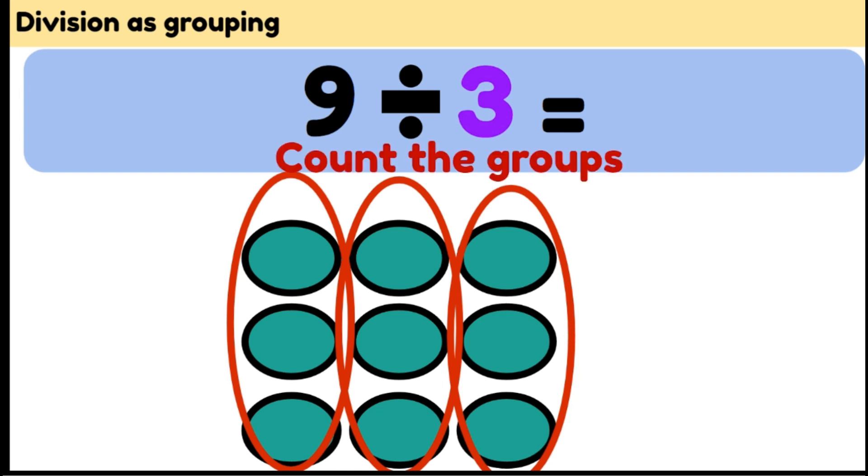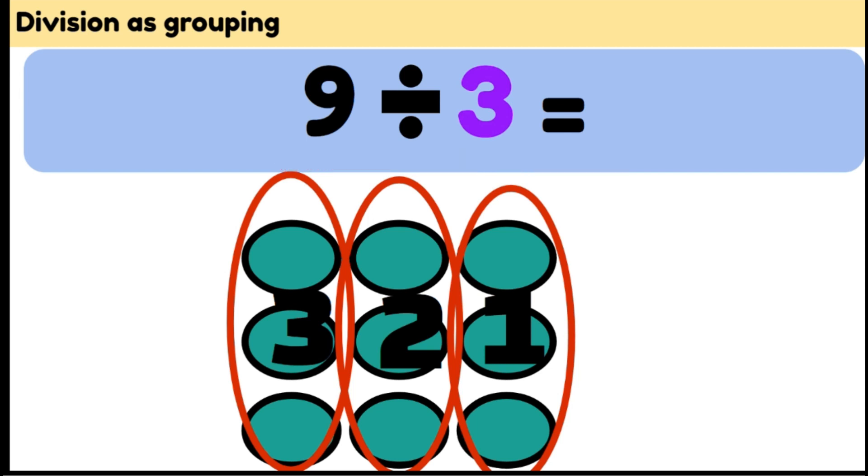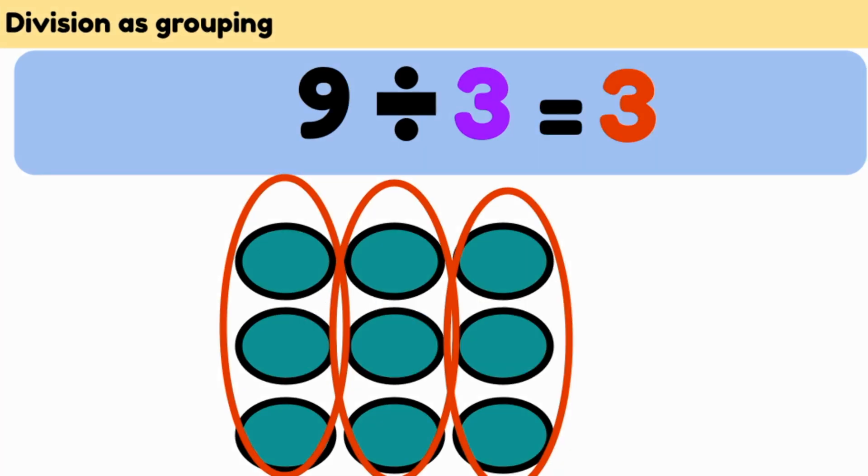We count our groups. 1, 2, 3. So 3 is our answer. From our total of 9, we can make 3 groups of 3.